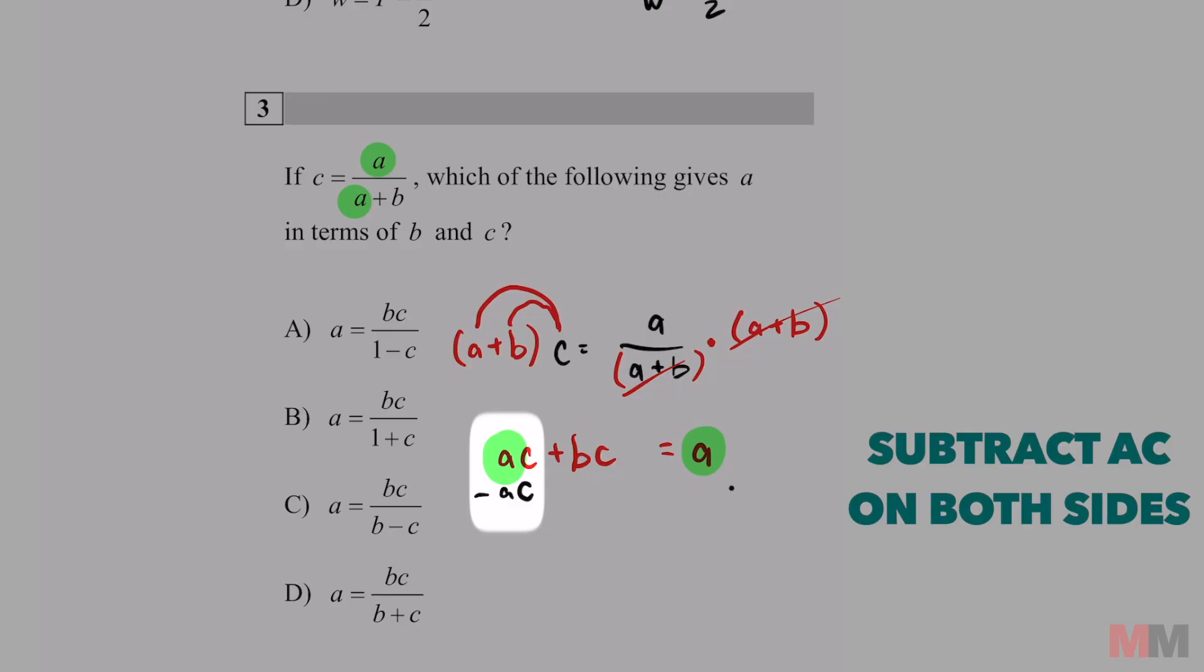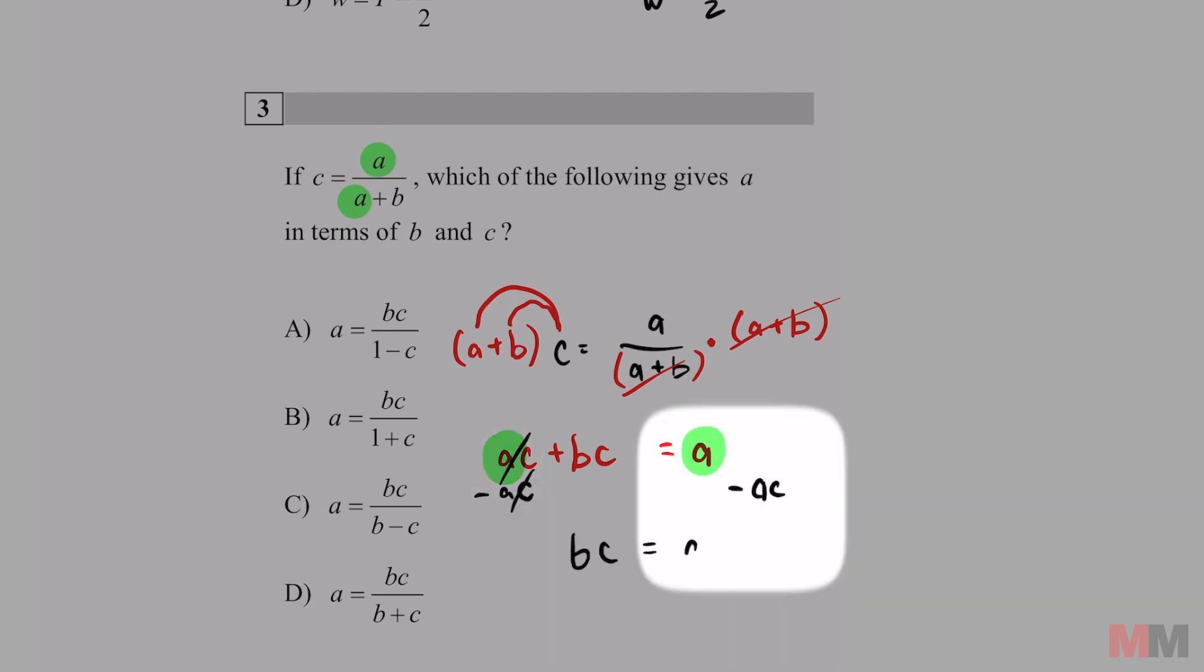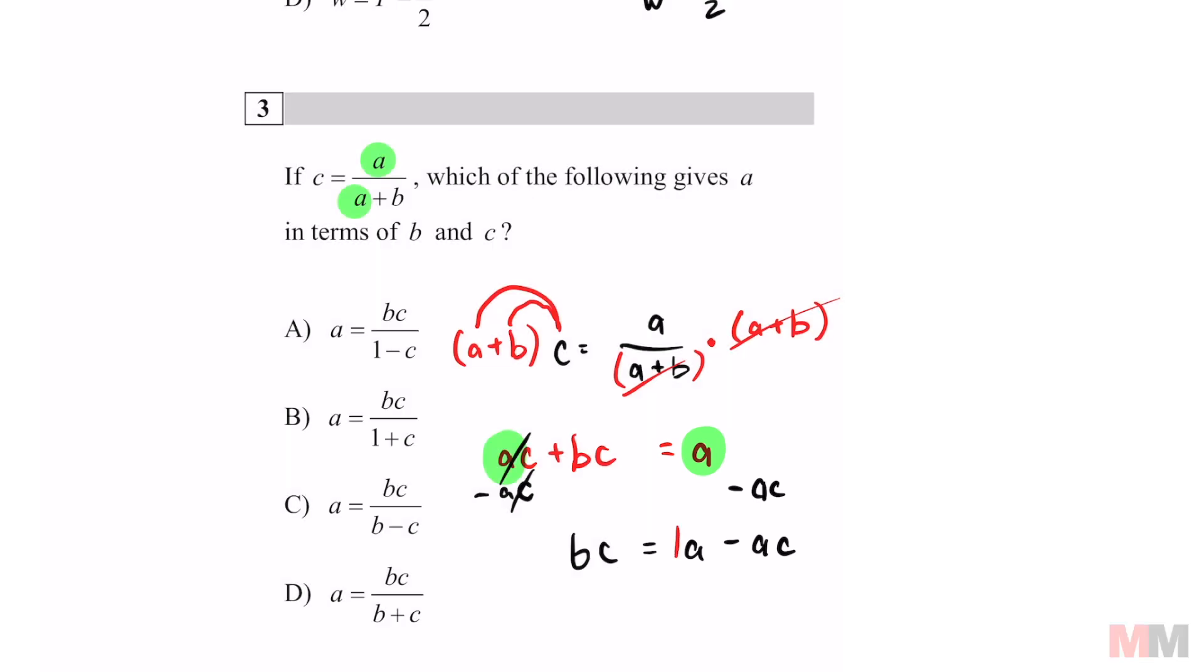You got to subtract AC just like that. So that's going to cancel off. I'm left with BC equals A minus AC. And if this A does not have a coefficient, it has a one. If they both have an A and they are not like terms, this is called factoring.